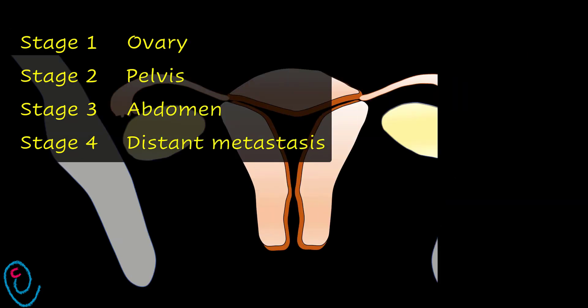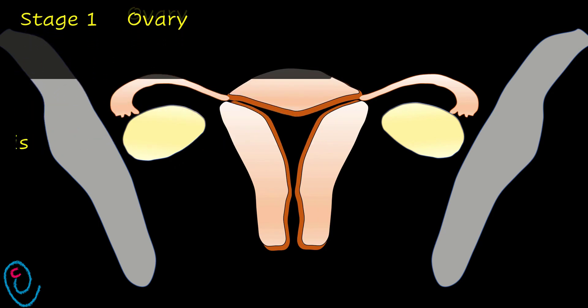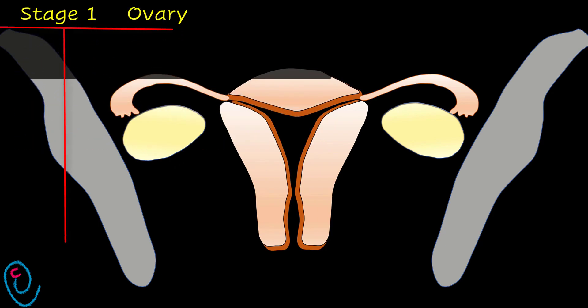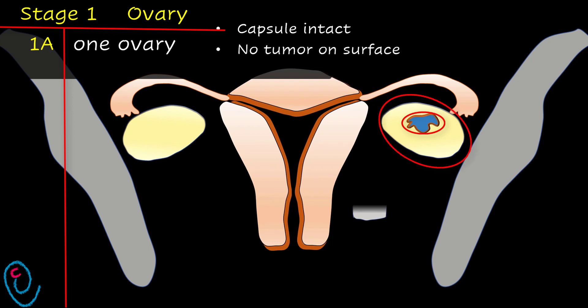In stage 1, the tumor is confined to the ovaries. In 1a, the tumor is limited to one ovary, while the capsule is intact, with no tumor on the surface, and negative washing.